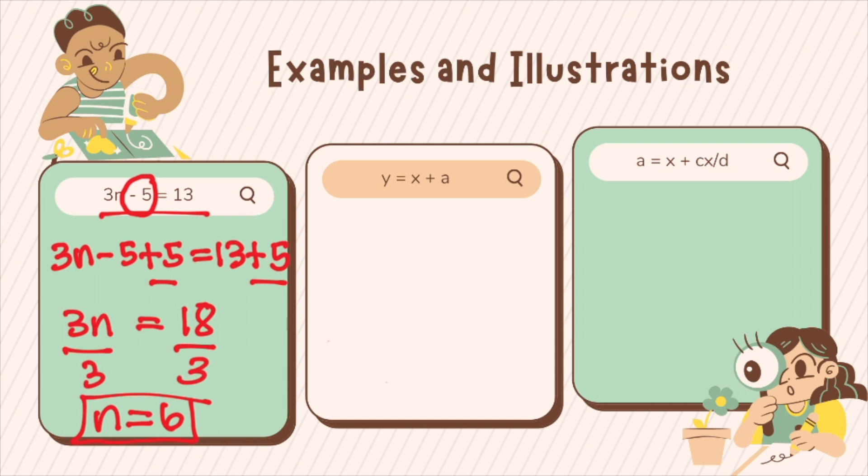The same process will be done if we do rearrangement of formulas, or changing the subject of a formula. For example, if you have y equals x plus a, you are asked to make x the subject. So this means to get x on its own on one side of the equation.